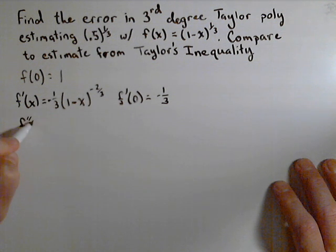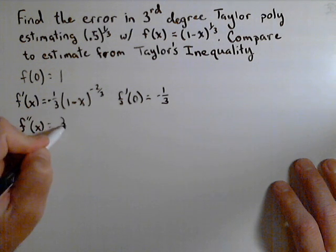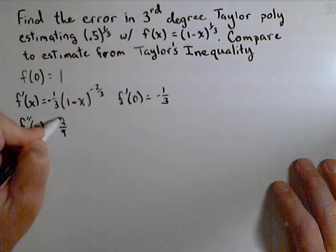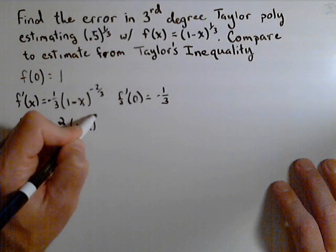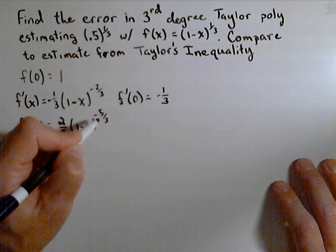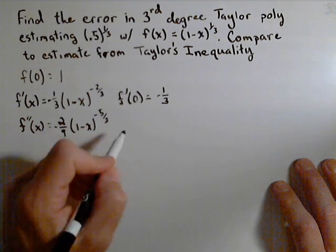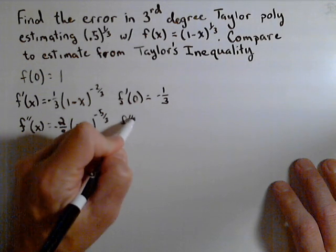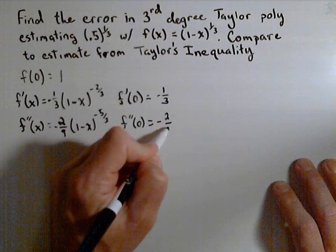f double prime of x is going to be positive two-ninths, bringing the exponent down, times one minus x to the negative five-thirds, again, times a negative one because of the chain rule, making that negative. So f double prime of zero is negative two-ninths.